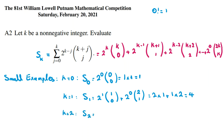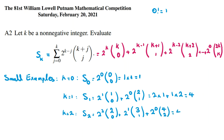For k=2, S_2 equals 2^2 times (2 choose 0) plus 2^1 times (3 choose 1) plus 2^0 times (4 choose 2). The first part is 4, the second is 2 times 3 equals 6, and the third is 6, giving 16. We see S_0=1=4^0, S_1=4=4^1, S_2=16=4^2, so we guess S_k = 4^k.